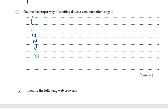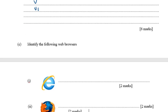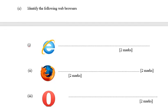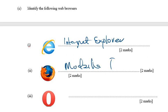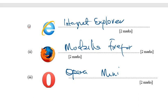The next question says: identify the following web browsers. The first one is Internet Explorer. The second one is Mozilla Firefox. The third one is Opera Mini. Those are the names of these web browsers.